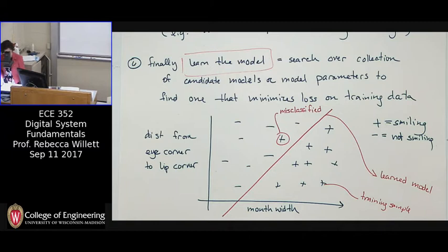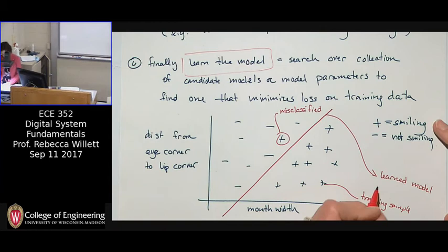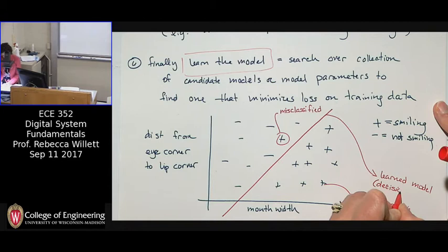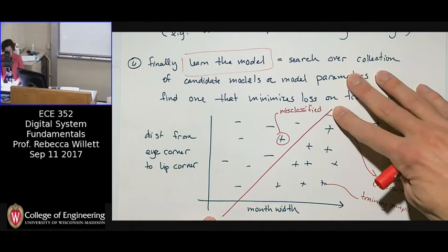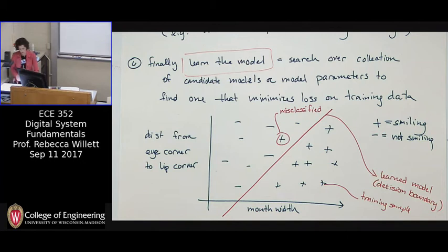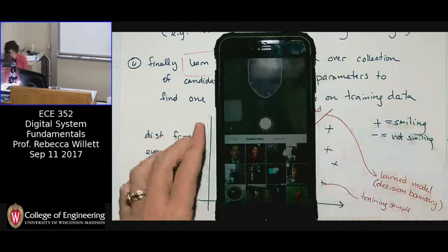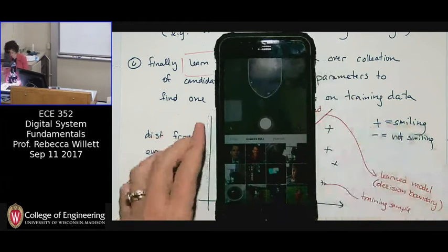In the specific example where we're classifying whether someone is smiling or not, we would call this the decision boundary — something that separates positive examples from negative examples. This is something that many of you have probably seen before: it is an app called FaceApp.